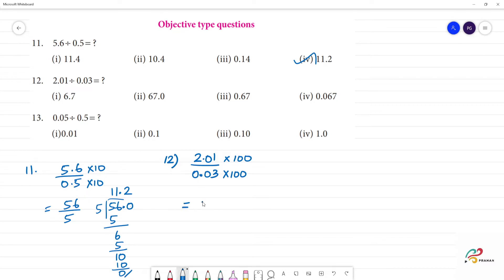201 divided by 3. We get 20, then 201 divided by 3.